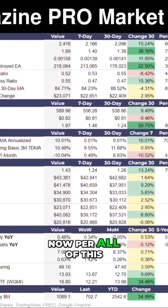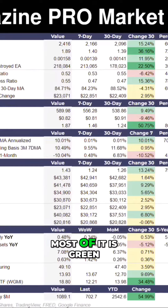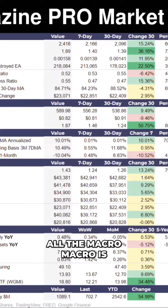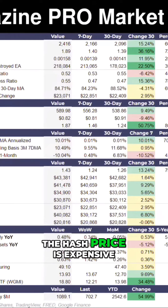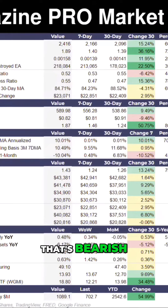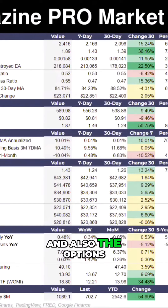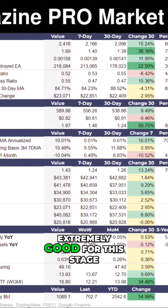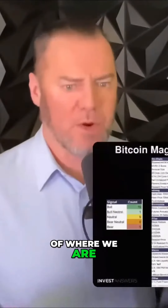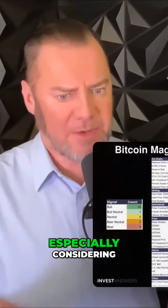Now per all of this, you can see most of it is good, most of it is green. All the price action is green, all the macro is about half green — that's probably where some of the weakness is. The hash price is expensive, that's bearish, and also the options 25 delta skew one month is bearish. But the rest is neutral or positive, so net-net extremely good for this stage of where we are in the market.